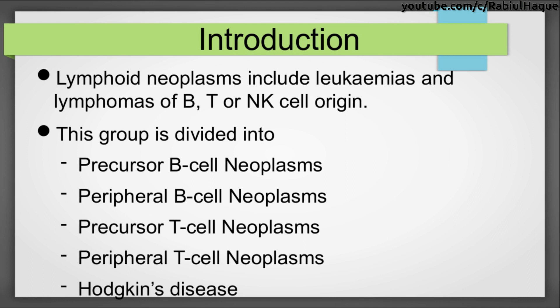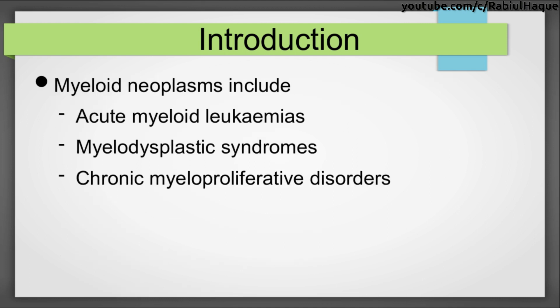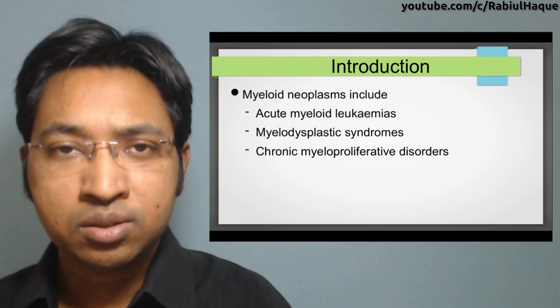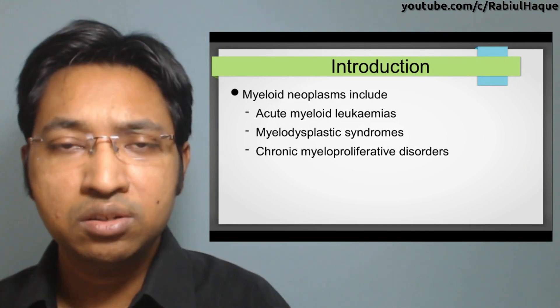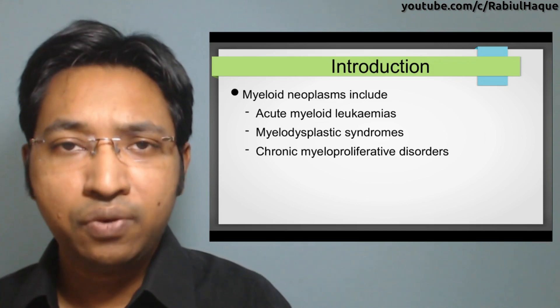Reactive proliferative disorders are divided into leukocytosis and leukemoid reaction. Neoplastic proliferative disorders are divided into lymphoid neoplasms, myeloid neoplasms, and histiocytic neoplasms. Lymphoid neoplasms include leukemias and lymphomas of B, T, and natural killer cell origin, subdivided into precursor B cell, peripheral B cell, precursor T cell, peripheral T cell neoplasms, and Hodgkin's disease. Myeloid neoplasms include acute myeloid leukemias, myelodysplastic syndrome, and chronic myeloproliferative disorders.